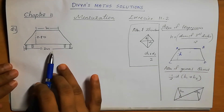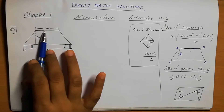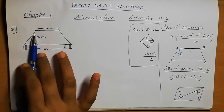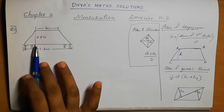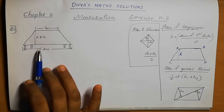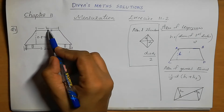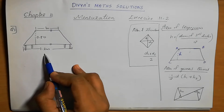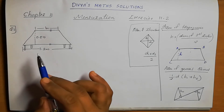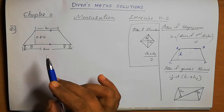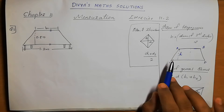Question number 1: The shape of the top surface of a table is a trapezium. Find the area if its parallel sides are 1 meter and 1.2 meter, and the perpendicular distance between them is 0.8 meter. Perpendicular distance means height. So everything is given and we can directly substitute in the equation to find the area of the trapezium.